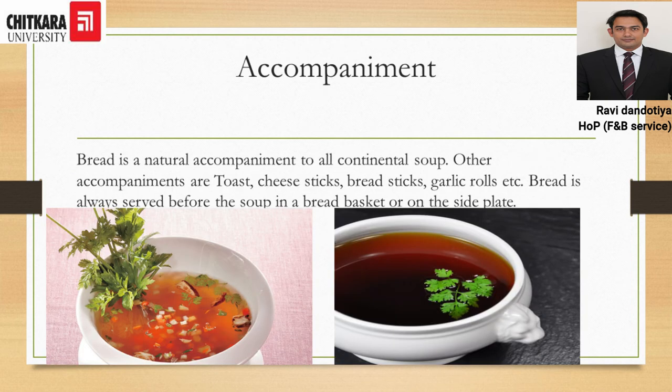An important thing about soup is that bread is a natural accompaniment to all continental soups. Various types of bread can be served, such as toast, cheese sticks, breadsticks, garlic rolls, and bread rolls. Bread is always served before the soup in a bread basket or on a side plate. In the images shown, on the left is a consommé brunoise soup and on the right is a consommé without garnish.